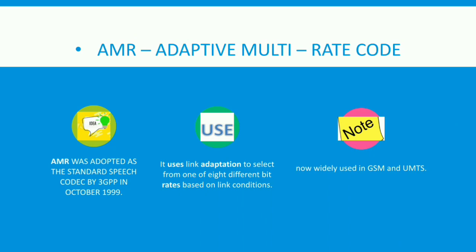The third topic is AMR — Adaptive Multi-Rate codec. AMR was adopted as the standard speech codec by 3GPP in October 1999. It uses link adaptation to select from one of eight different bit rates based on link conditions, and is now widely used in GSM and UMTS.